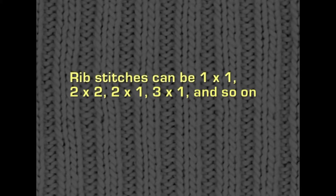Rib knit fabrics have alternating lengthwise rows of plain and purl stitches constructed so that the face and back of the fabric appear alike. This may be produced either on a flat rib machine or a circular rib machine. In the flat rib machine, one set of needles is placed opposite the other in an inverted V position at 45 degrees to the horizontal. In the circular rib machine, one set of needles is placed vertically in a cylinder and the other set is placed horizontally on a dial. In both machines, one set of needles pulls the loops to the front and the other set pulls the loops to the back. Each set alternately draws the loops in its own direction depending upon the width of the rib desired; for example, rib stretches can be 1x1, 2x2, 2x1, 3x1 and so on.